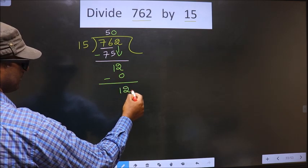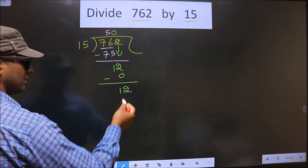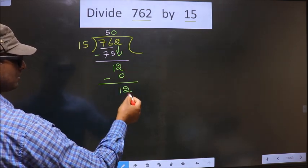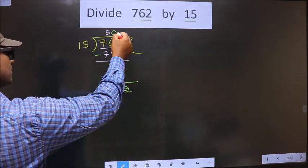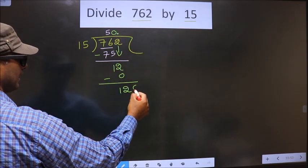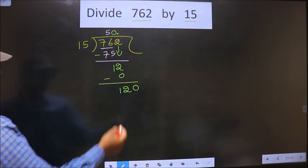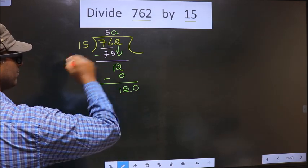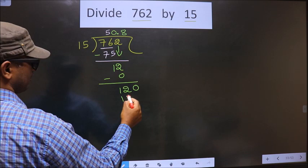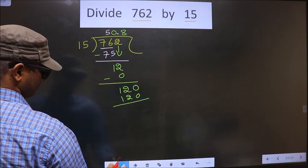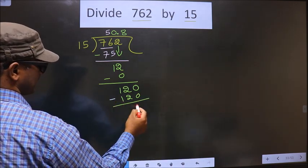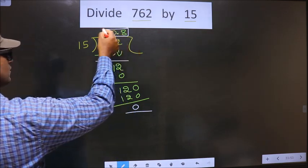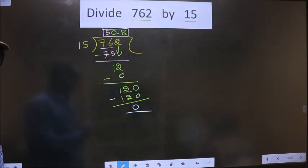Now here, 12 is smaller than 15. We did not bring any number down, so over here you can put a dot and take 0. Now here we have 120. When do we get 120 in the 15 table? 15×8=120. So now you subtract, you get 0. So this is our quotient.